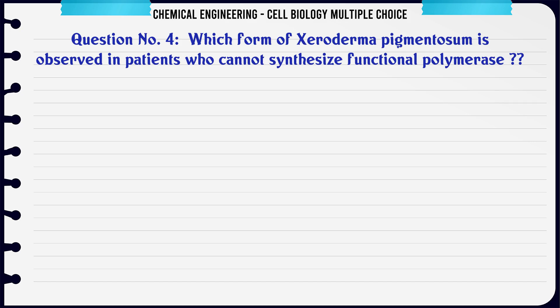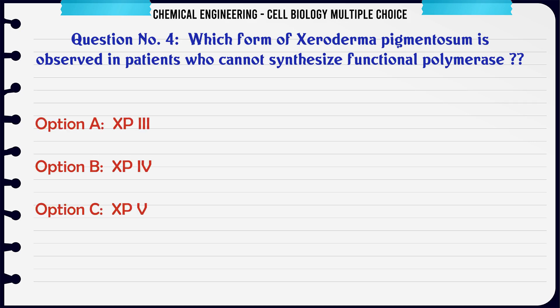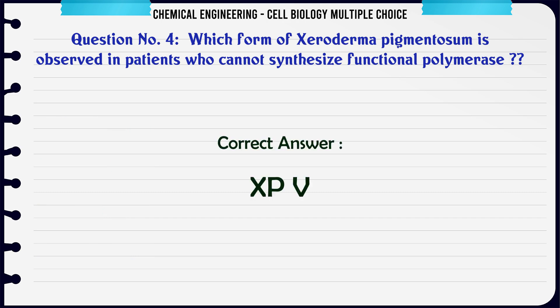Which form of xeroderma pigmentosum is observed in patients who cannot synthesize functional polymerase? A. XP3. B. XP4. C. XPV. D. XP6. The correct answer is XPV.